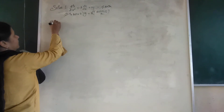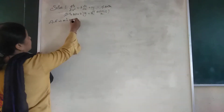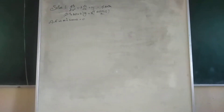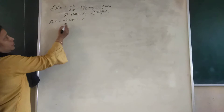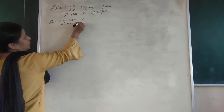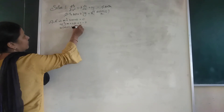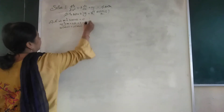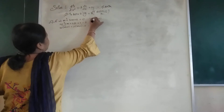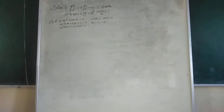Now writing the auxiliary equation to get the first part of the solution: φ(y) = 0, given by m² + 3m + 2 = 0. Finding the factors: splitting the middle term as m² + m + 2m + 2 = 0 gives (m + 1)(m + 2) = 0. Therefore m = -1 and m = -2 are the two roots of the auxiliary equation.